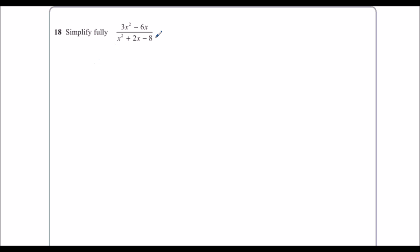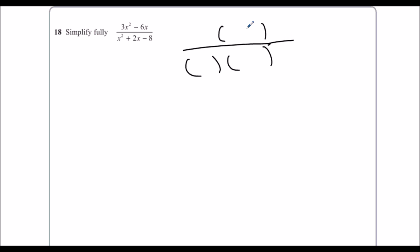Simplify fully. So we've got some algebraic fractions here. I know they're going to both factorise — that's what's going to happen. I'm going to end up with a single bracket on the top, a double bracket on the bottom, and then one of these brackets on the bottom is going to cancel with the bracket on the top. So let's factorise the top first.